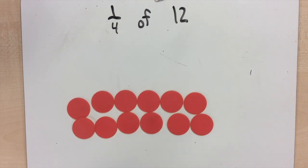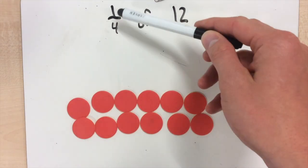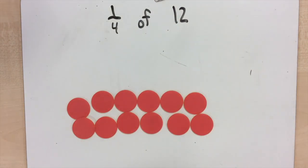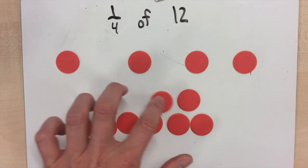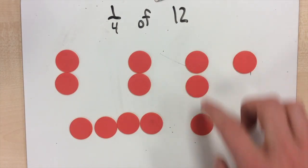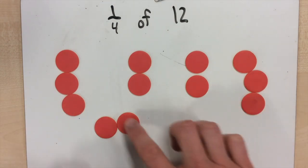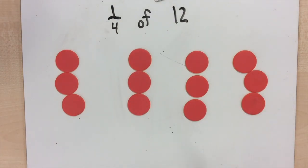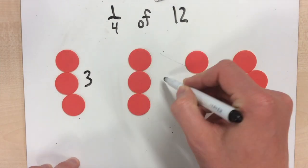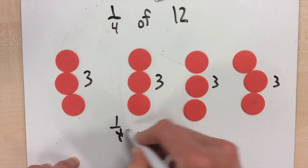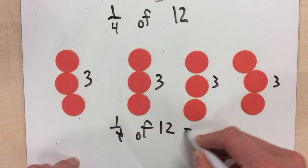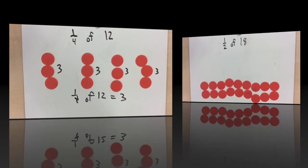This next problem is very similar to the last one. But instead of finding 2 groups of 12, since it's 1 quarter or 1 fourth, we're going to look for 4 groups of 12. So I'm going to count 1, 1, 1, 1, 2, 2, 2, 2, 3, 3, 3, 3. And as you can see, each group has 3 in it. So 1 quarter of 12 equals 3.